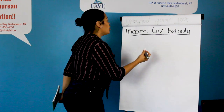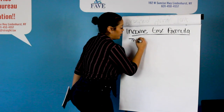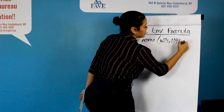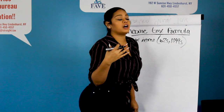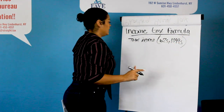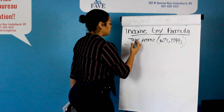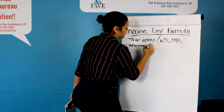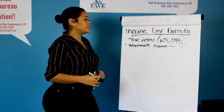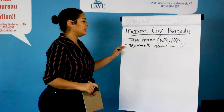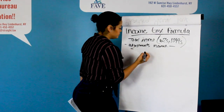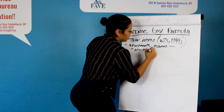Our income tax formula is going to start with our total income. Where does that total income come from? That's going to come from anything — W-2s, 1099s, anything like that, for whatever your job is, whether you are a 9-to-5 employee or an independent contractor. The formula starts with the total amount of income, then it's going to be minus any adjustments you have to that income. An example of an adjustment would be student loan interest. That's going to equal what your adjusted gross income is.